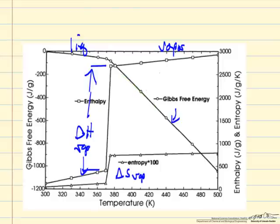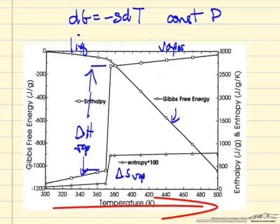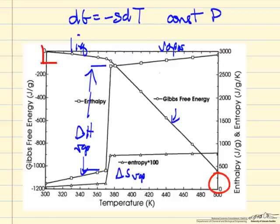Notice the Gibbs free energy doesn't change very much with temperature for the liquid. So this is the equation for constant pressure. Since entropy is a small term for the liquid, then this change is small.